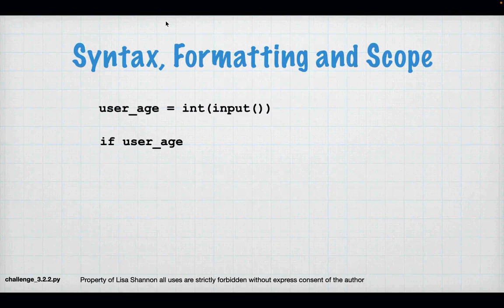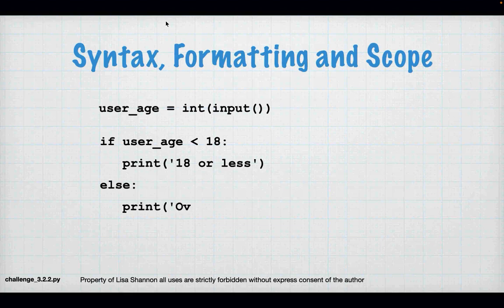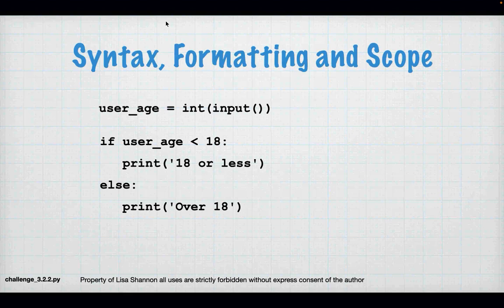So, syntax, formatting, and scope. Here I have a Python script: userAge = int(input). I'm expecting someone to input an integer. I'm going to ask a question: if userAge is less than 18, print '18 or less', else print 'over 18'. This is challenge 3.2.2.